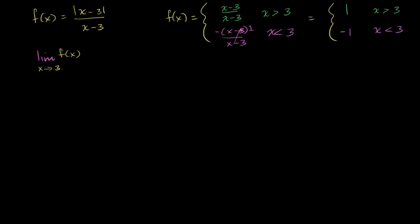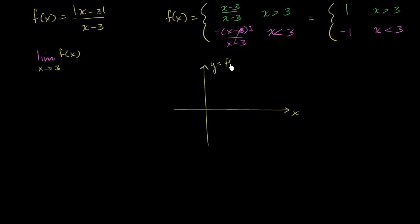So let's visualize this function now. Let me draw some axes — that's my x-axis, and this is my f of x axis, y is equal to f of x. What we care about is x equal to 3, so we mark 1, 2, 3, 4, 5 on the x-axis. And on the y-axis, this is positive 1, 2, and negative 1 and negative 2.